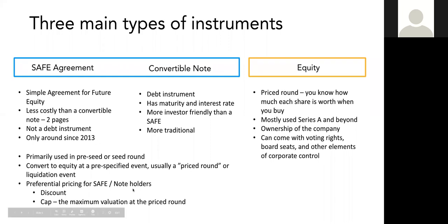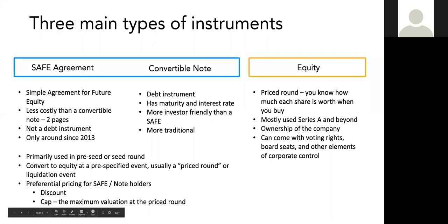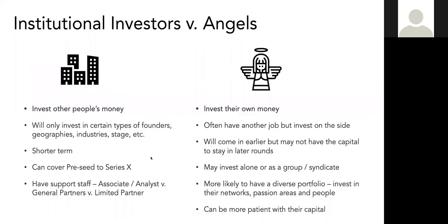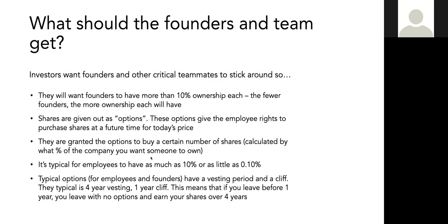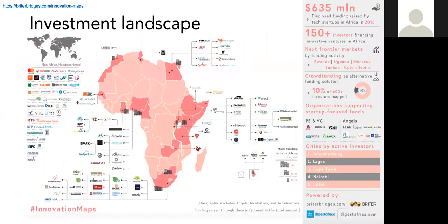Whoever asked the question about not being clear on the convertible note, can you give me a little bit more detail as to what is unclear? In the meantime, I'll keep going.